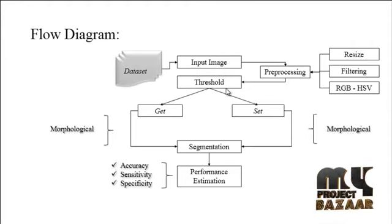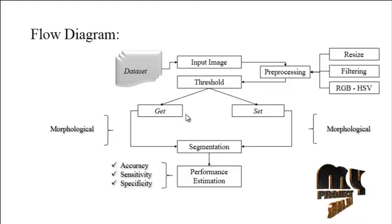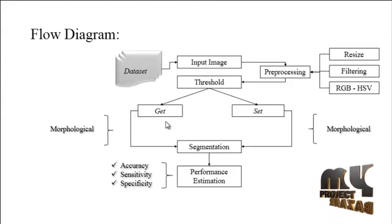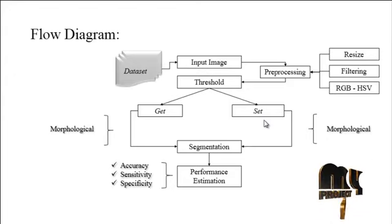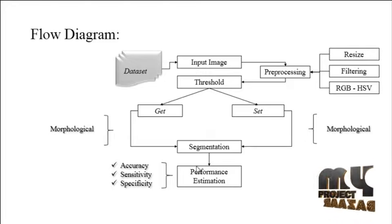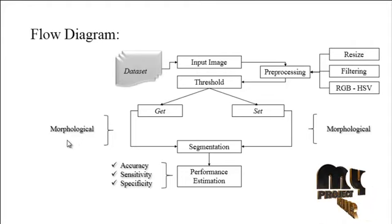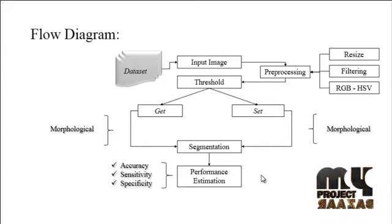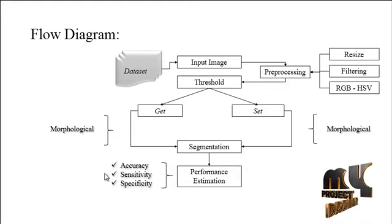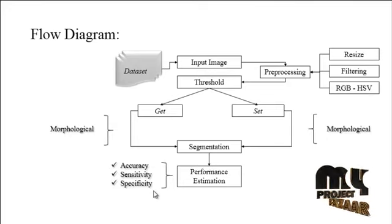After noise filtering, RGB to HSV color transformation is applied to detect the approximate location of the rust region. Then the threshold is applied in two steps: 'get' and 'set'. Get applies the threshold limit using the gray threads method, while set allows the user to provide an approximate threshold range. After getting the threshold value, segmentation is carried out using the morphological segmentation algorithm. Performance is then evaluated using accuracy, sensitivity, and specificity to determine whether the process is efficient.